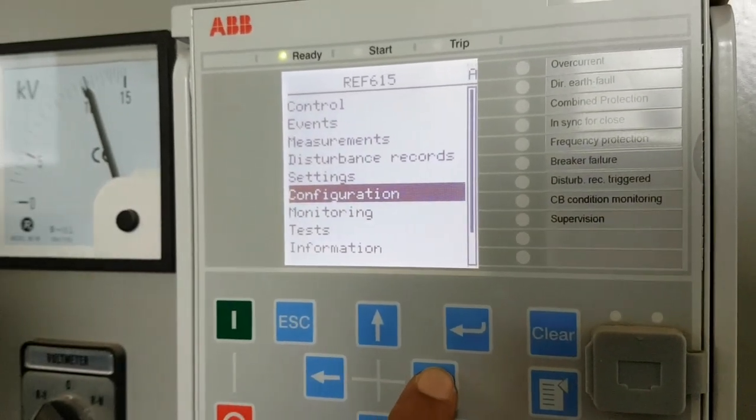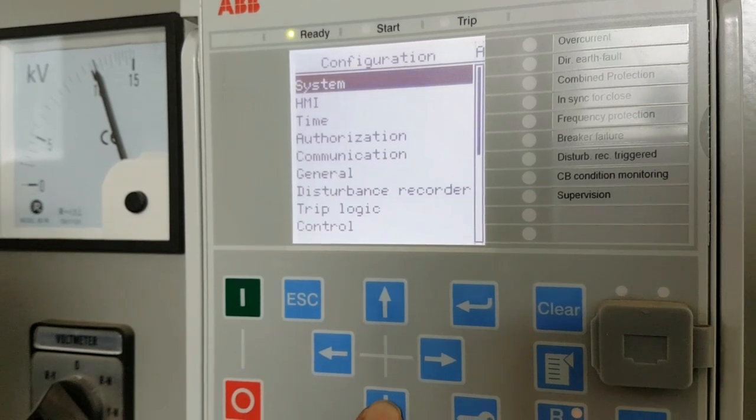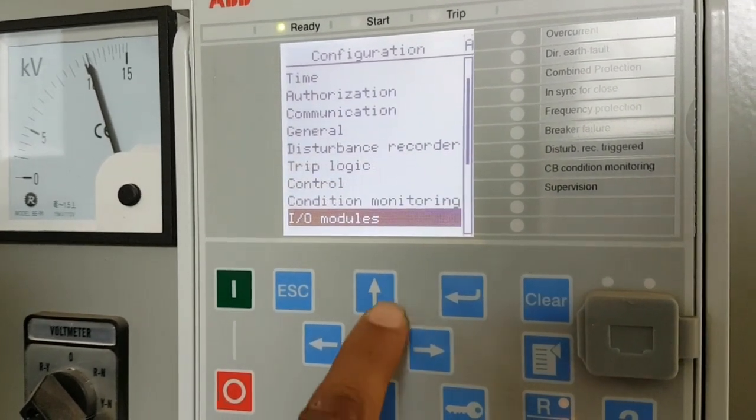Here we are going to change the CT ratio of REM615 REMT relay from ABB. We have to go to configuration, then scroll down to analog input.